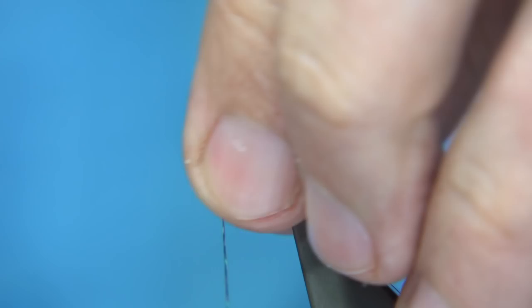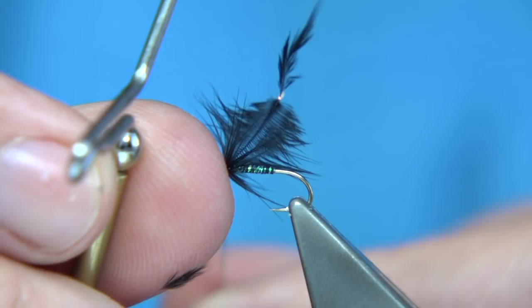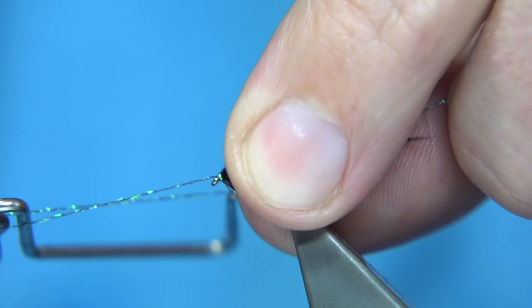You have to remember the micro glint is much thicker than your uni threads and so on. One turn of this is like equivalent to three turns of say uni.